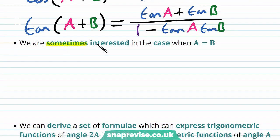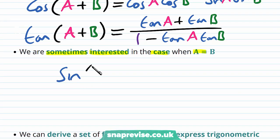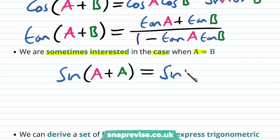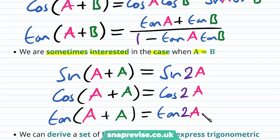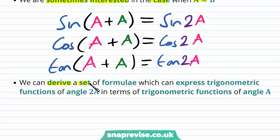We are sometimes interested in the case when a equals b. For example, we have sine of a plus a, and this will be equal to the sine of 2a. Similarly, cos of a plus a gives cos of 2a, and tan of a plus a gives tan of 2a. We can derive a set of formulae which express trigonometric functions of angle 2a in terms of trigonometric functions of angle a.